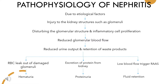Pathophysiology of nephritis: due to etiological factors, there is injury to the kidney structures such as the glomeruli, which disturbs the glomerular structure. This triggers inflammatory cell proliferation, and due to this, glomerular blood flow is reduced, resulting in reduced urine output and retention of waste products.